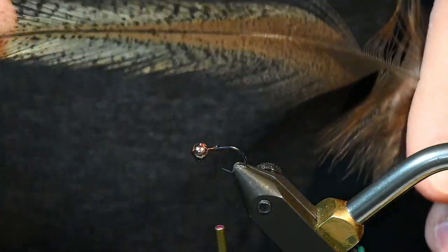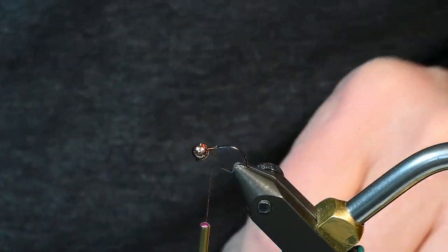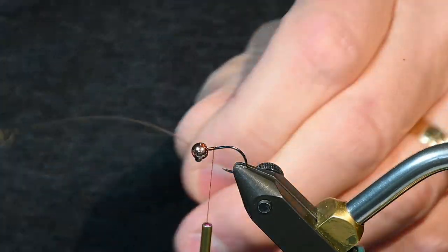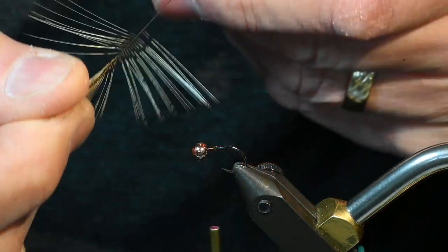The tail is taken from the Coque de Leone feather. This is from a saddle hackle. I open up the fibers.